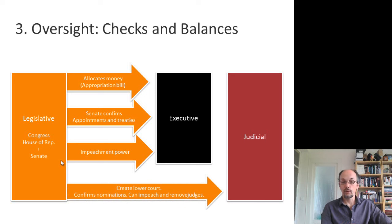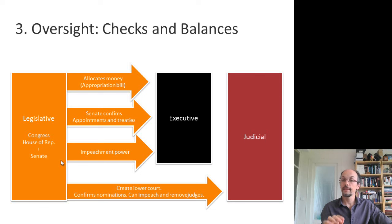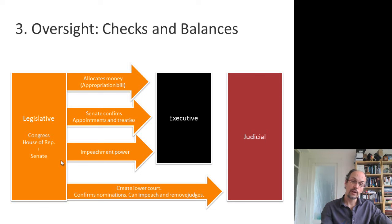Through impeachment, Congress can even remove the president from office — enormous power. And according to the Constitution, something we haven't discussed much, Congress is in charge of organizing the judicial branch. In the Constitution, the only thing mentioned about the judicial branch is the existence of the US Supreme Court, but Congress organizes the rest of the system.